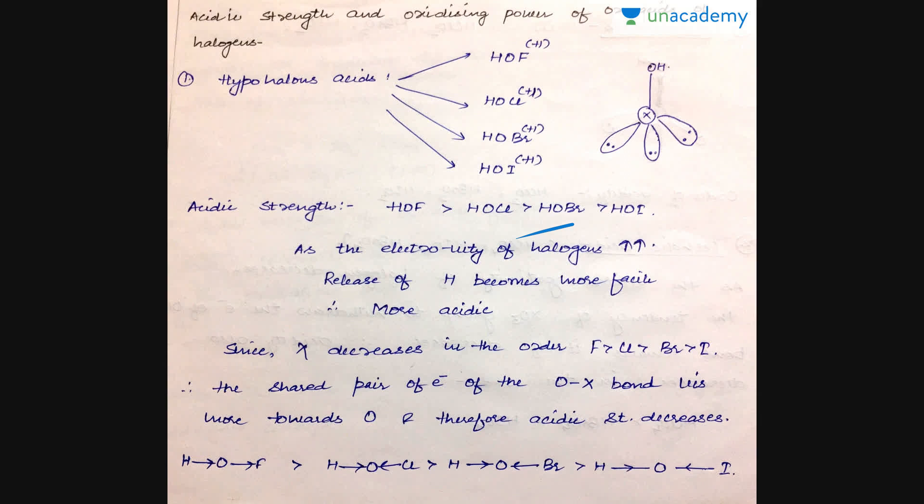Because of this electron deficiency of oxygen, the release of the proton becomes easier, as the shared pair of electrons of the O–H bond lies more towards oxygen. As we move down the group, electronegativity decreases from fluorine to chlorine to bromine to iodine. Therefore the shared electron pair of the O–X bond lies more towards oxygen, giving oxygen sufficient electron balance so it doesn't need to extract electrons from the proton, making the acid more acidic.